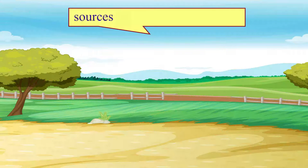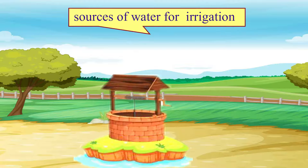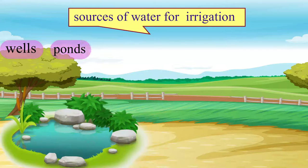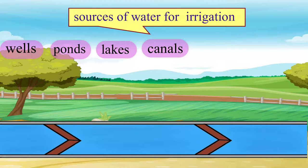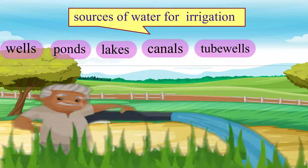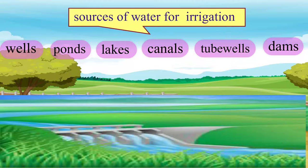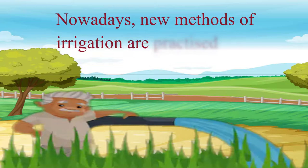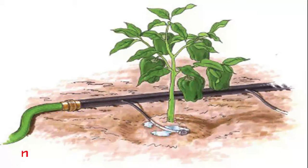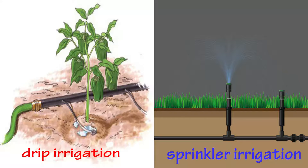Irrigation is very important for agriculture because of uncertain rainfall in India. The various sources of water for irrigation are wells, ponds, lakes, canals, tube wells and dams, etc. Nowadays, new methods of irrigation are practiced like drip irrigation and sprinkler irrigation.